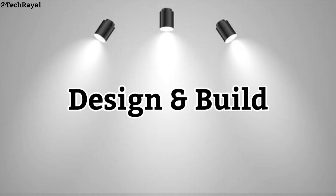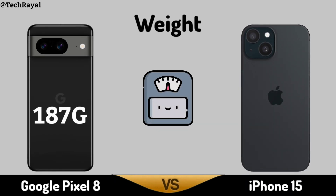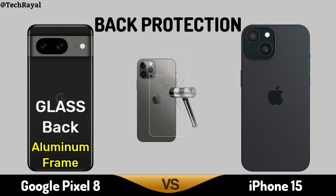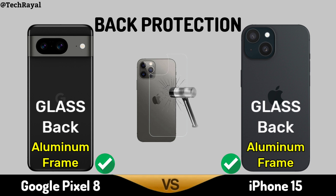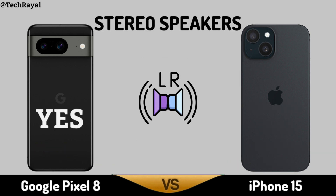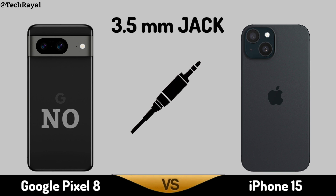Now, Core Design and Build: Thickness. Weight. Weight Protection. Stereo Speakers. 3.5mm jack.